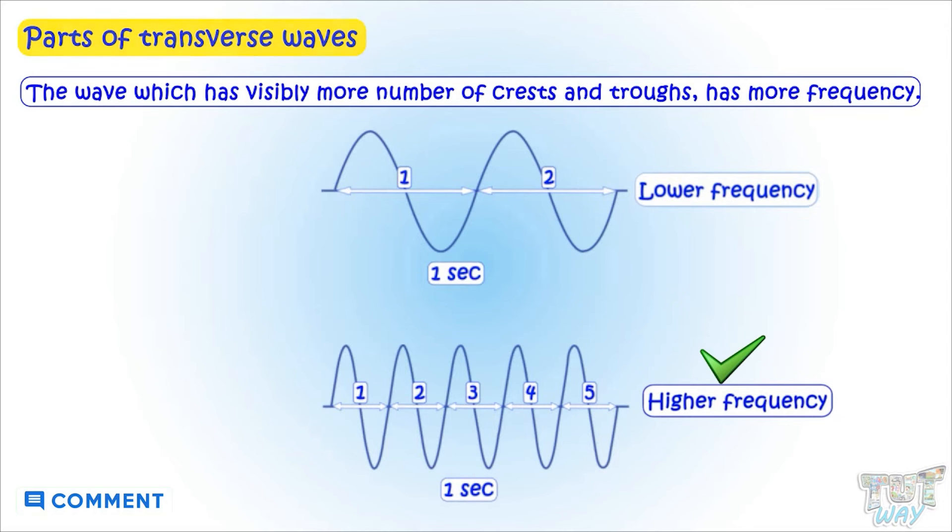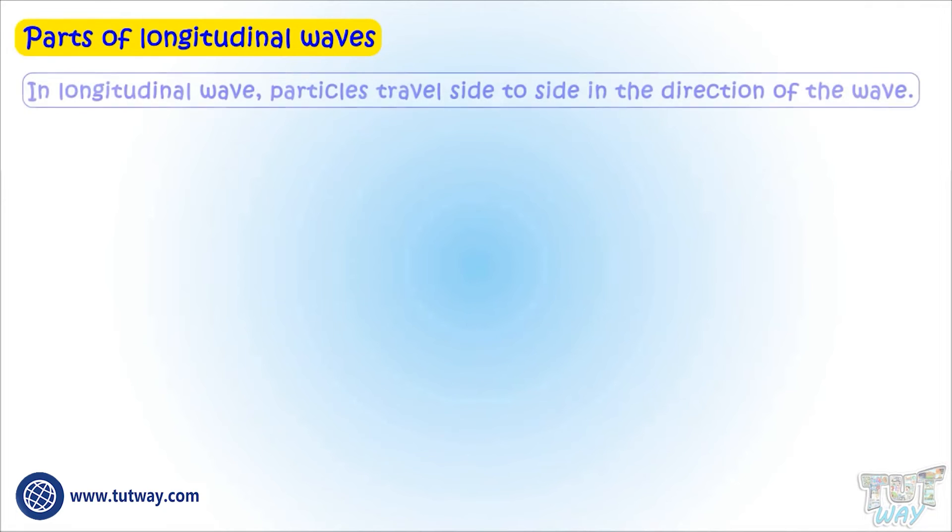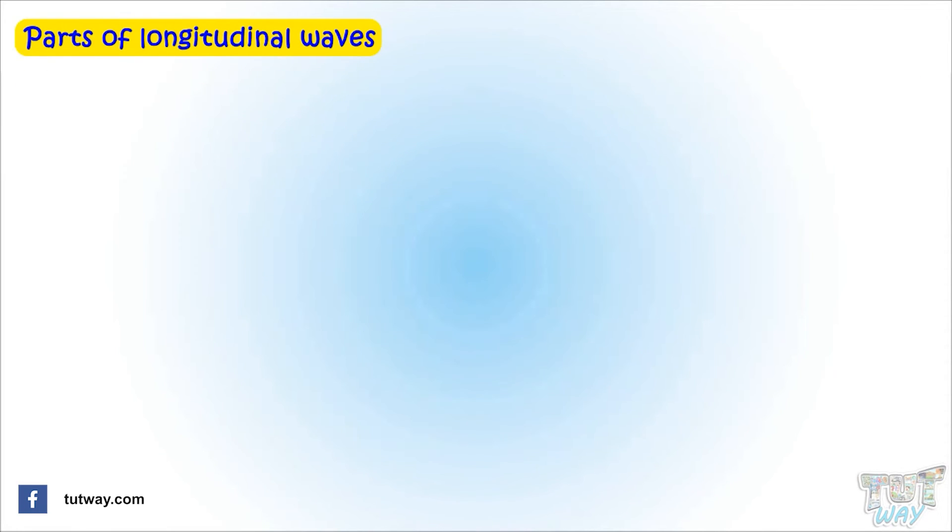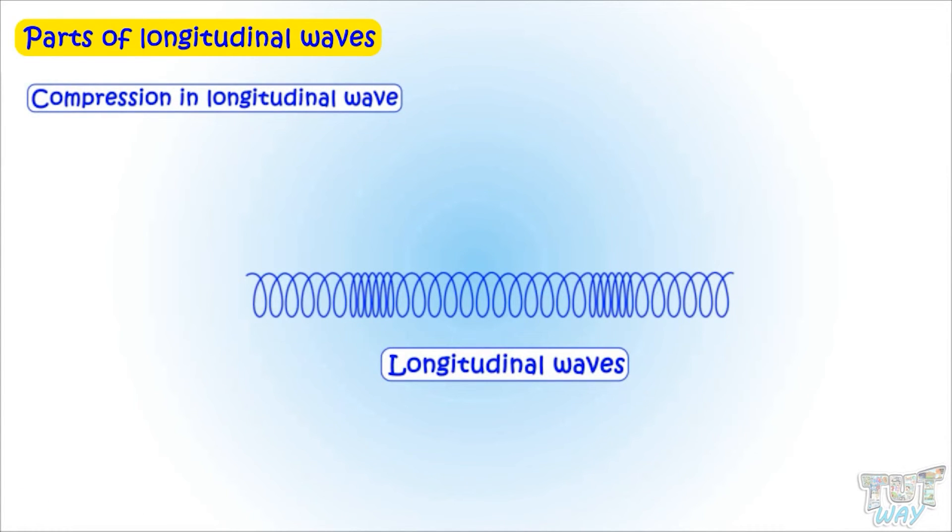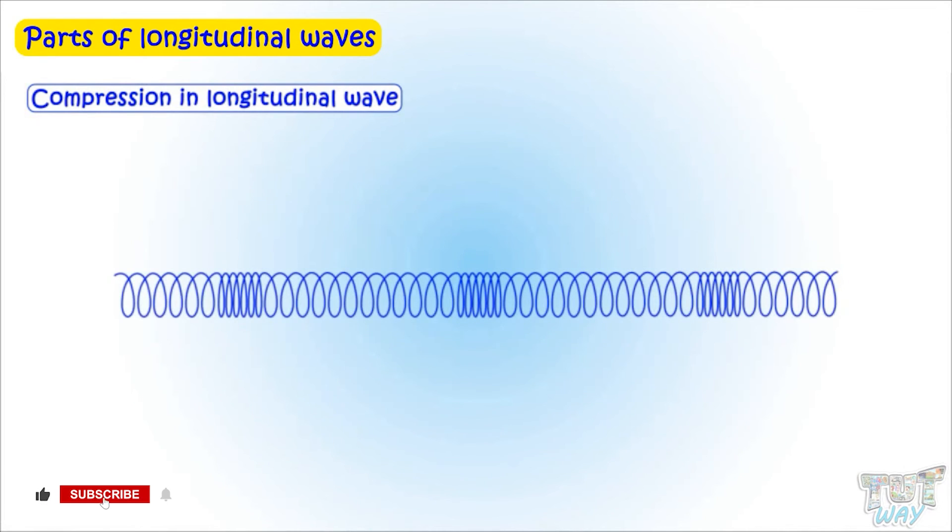Now let's learn the parts of the longitudinal wave. In case of the longitudinal wave, particles travel side to side in the direction of the wave. Let's first learn what is compression in case of longitudinal waves. Compression is that part of the wave where particles are crowded together or very close to each other. Like in this wave, you can see at three places there are particles gathered together. So there are three compressions in this wave.